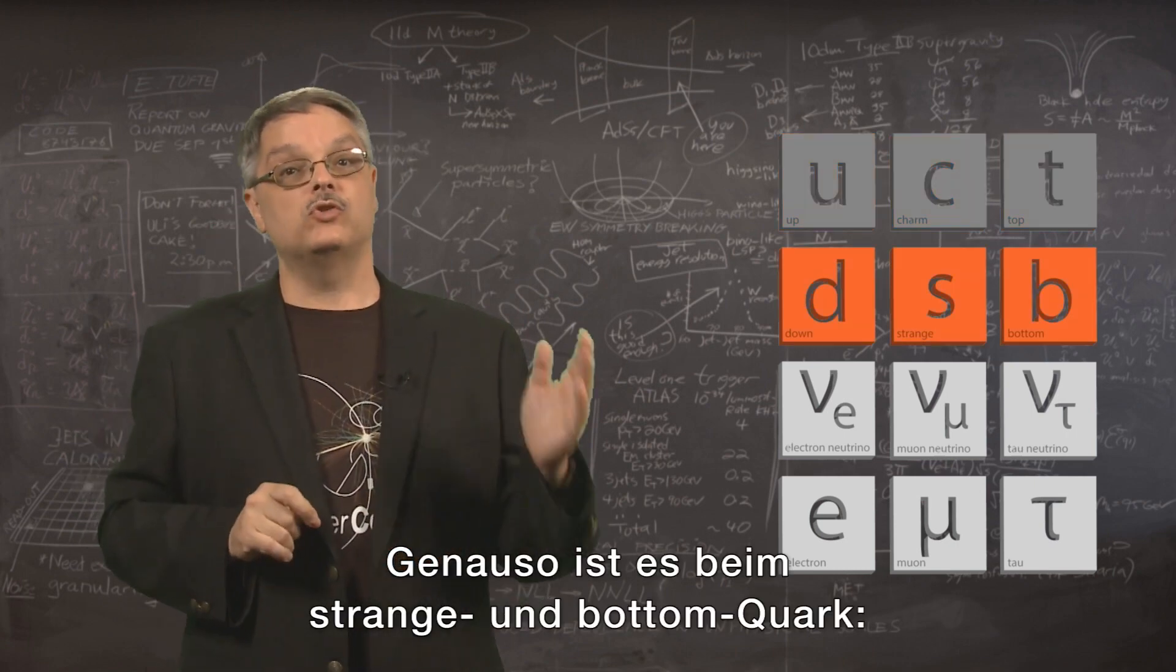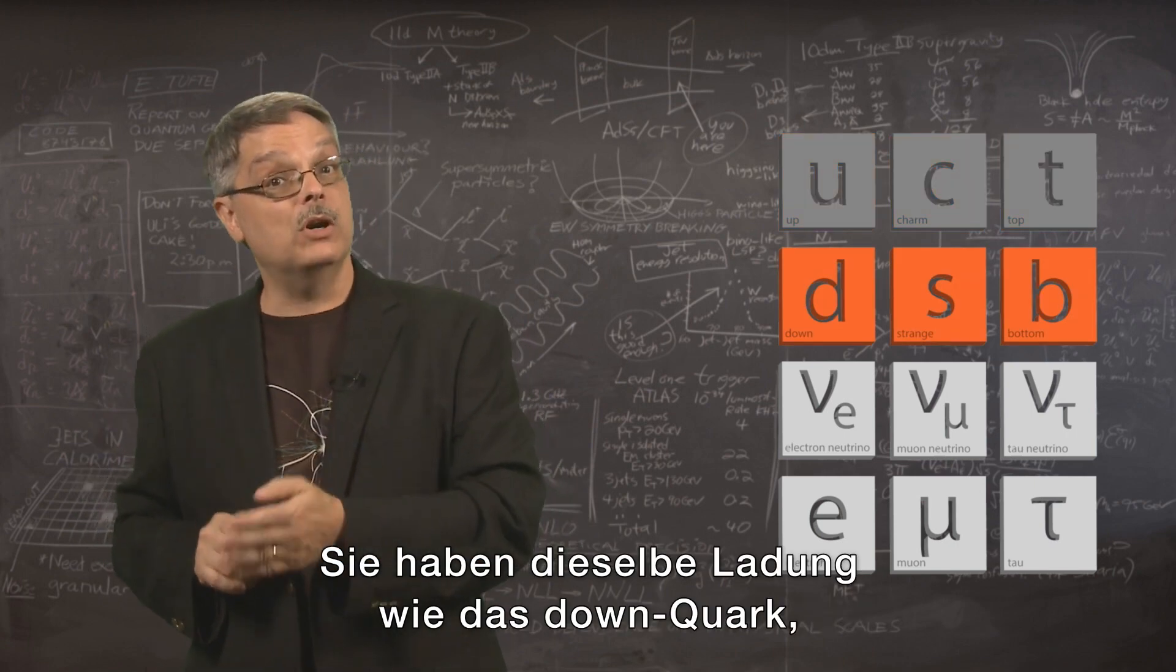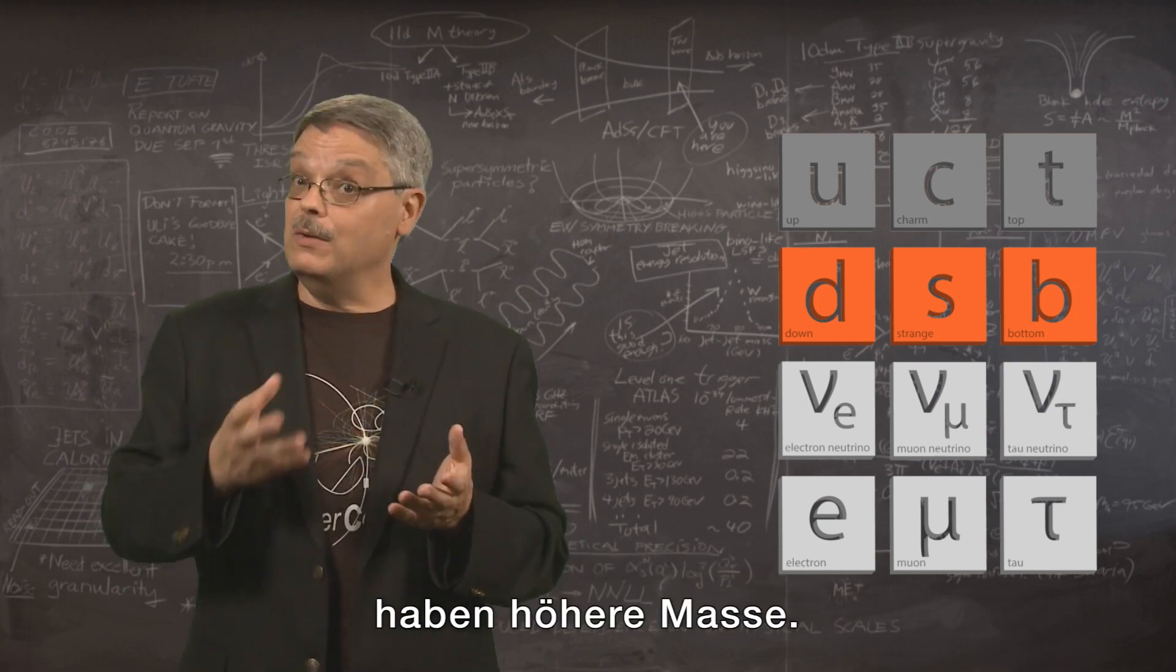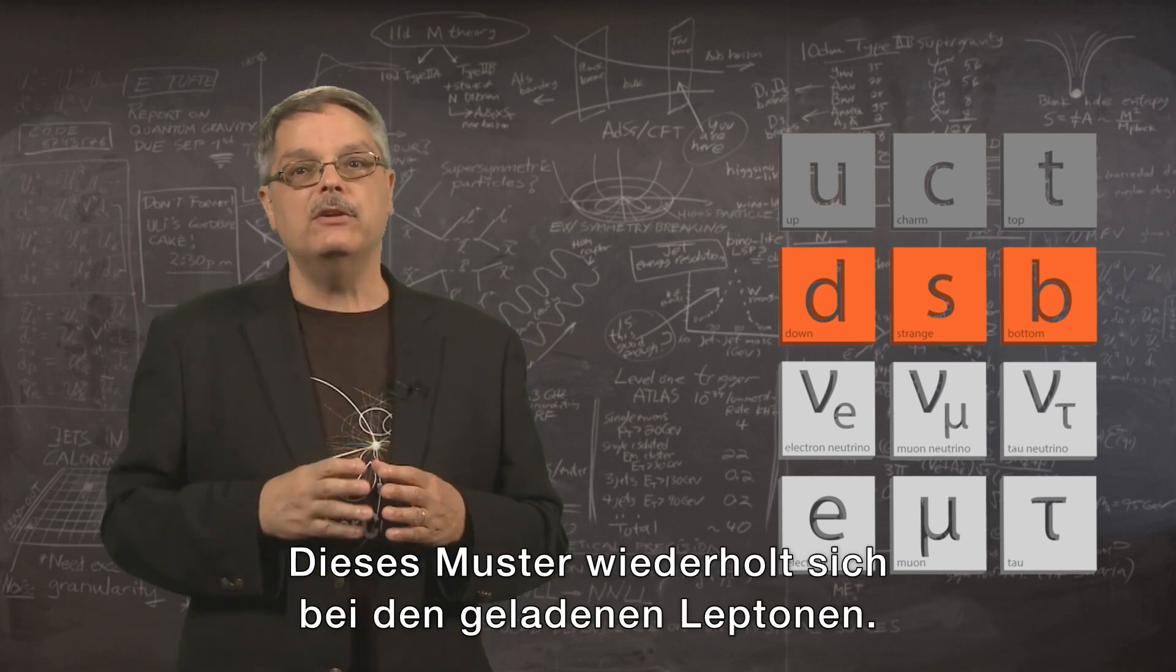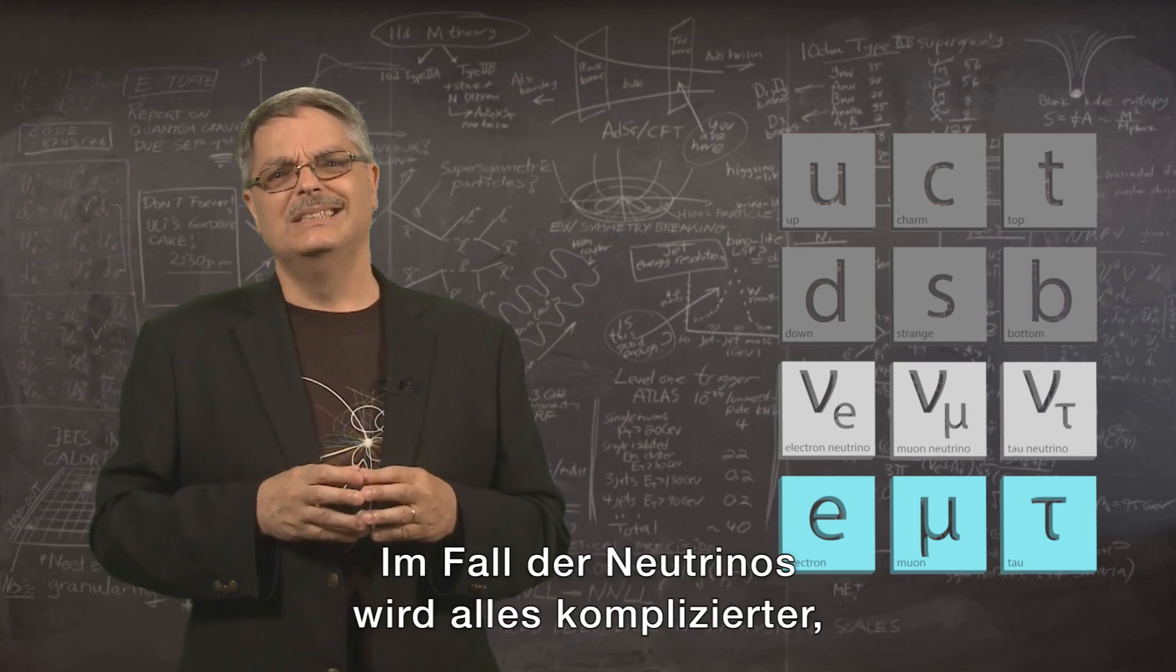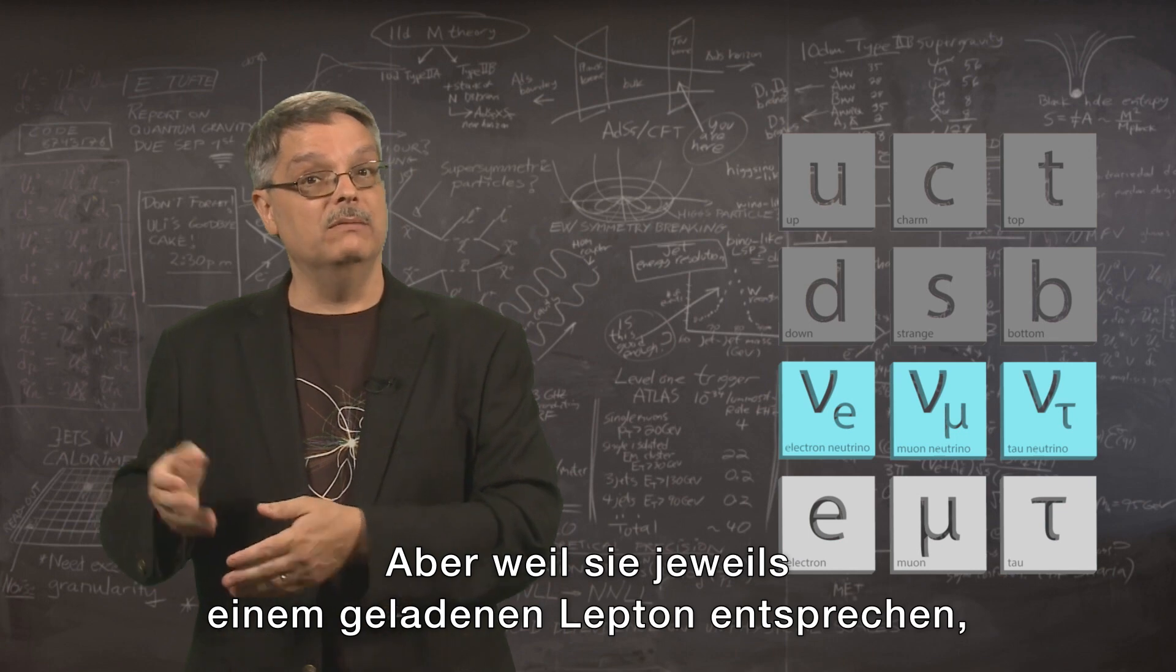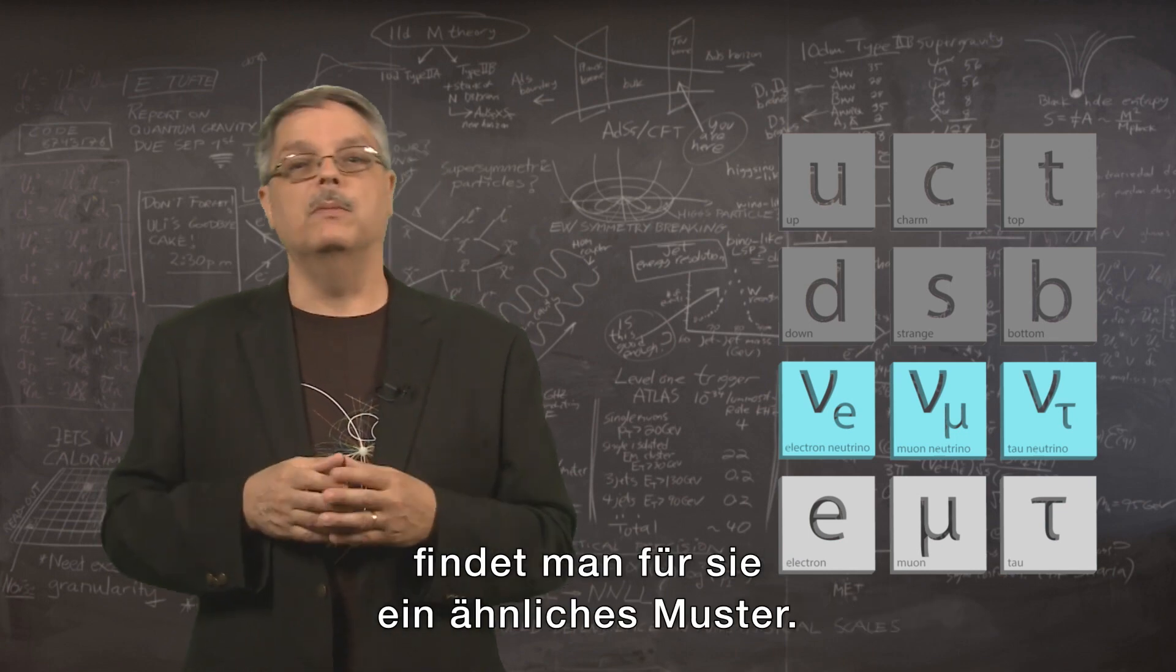In the same way, the strange and bottom quark have the same charge as the down quark, with the ones on the right having a higher mass. This pattern is repeated with the charged leptons as well. It's a little trickier to talk about neutrinos, but they are paired with their respective lepton, so we can group them in a comparable pattern.